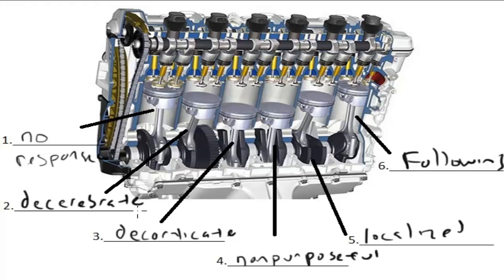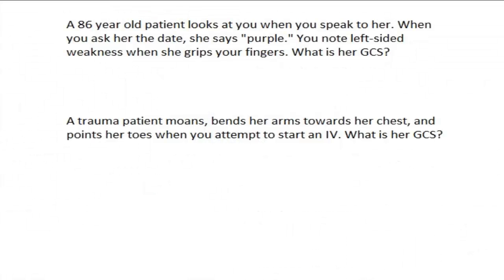Hopefully this was really easy for everybody to understand — super simple to remember. We gave you a nice little memory aid: the four eyes, the Roman numeral five, and the six-cylinder motor. Let's go ahead and look at a couple of practice problems and make sure everybody can use the Glasgow Coma Scale.